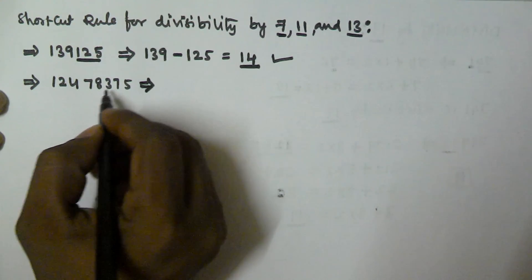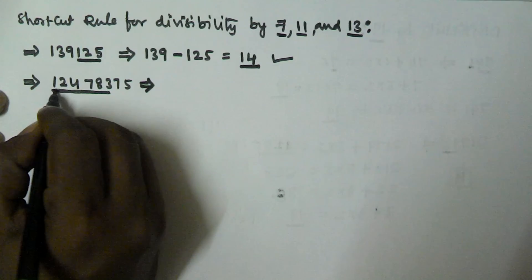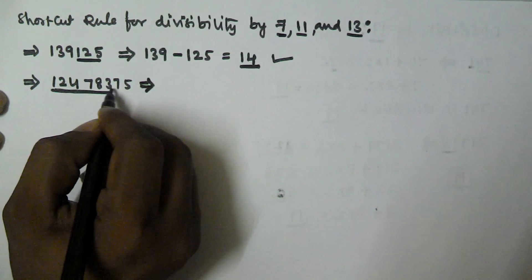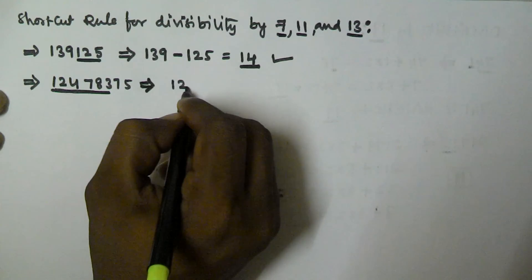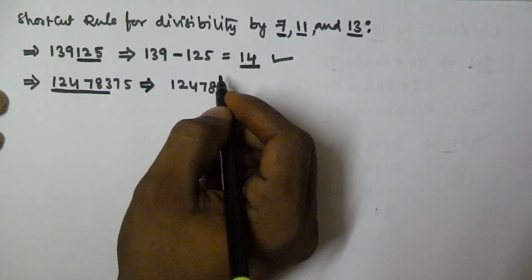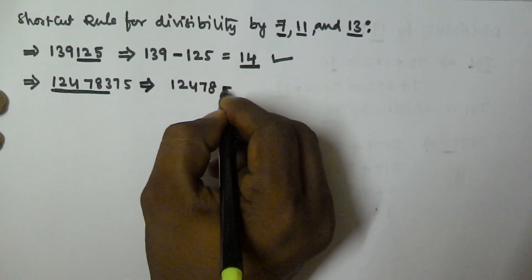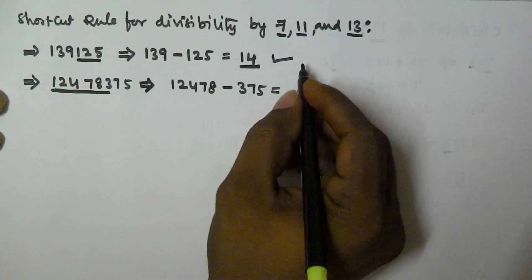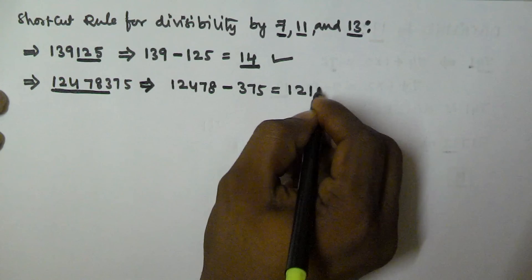We take all the digits except the last three digits. The digits are 1, 2, 4, 7, 8 — except the last three digits 3, 7, 5. So we take 12478, and then we subtract the last three digits, that is 375. If we subtract, we get 12103.